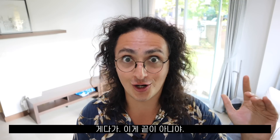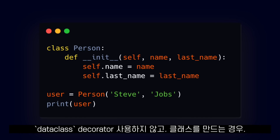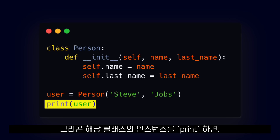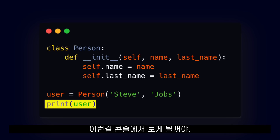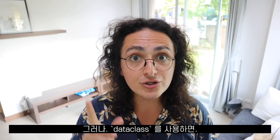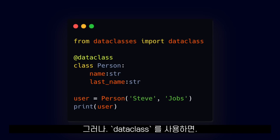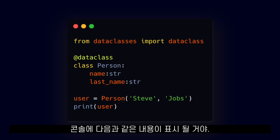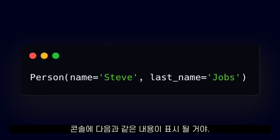But that is not all. When you create a class without using the dataclass decorator and you print an instance of that class, you will see something like this in your console. But when you use a data class, you will see something like this on your console.